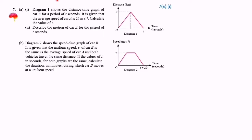As we know, the formula for average speed equals total distance over total time. So, from this graph, the total distance is 1 kilometre plus the return trip of 1 kilometre, giving a total distance of 2 kilometres. We need to convert the kilometres to metres, so that is 2 times 1,000 over the total time taken, T.